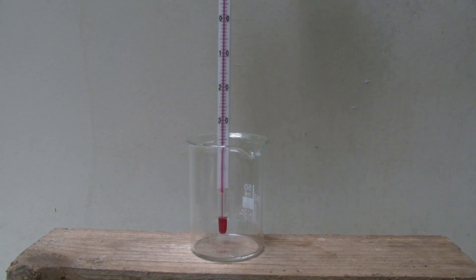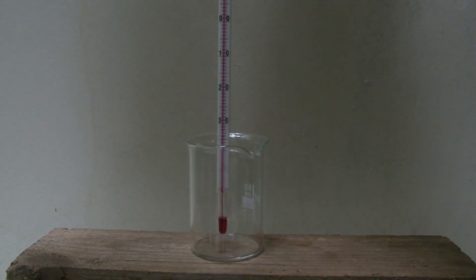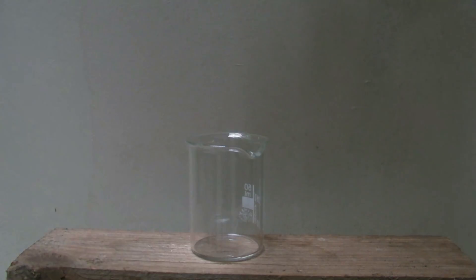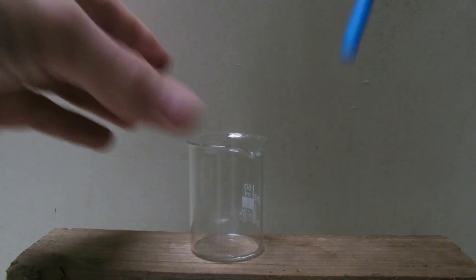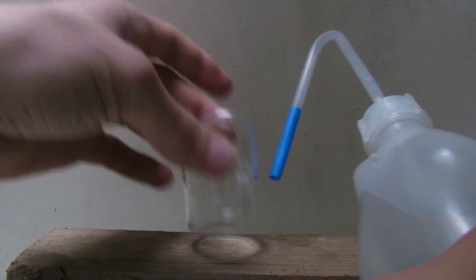For this experiment a 50 milliliter beaker is placed on a piece of wood. A thermometer is hanging into the beaker which is held by a ring stand. Some water is put on the wood under the beaker.